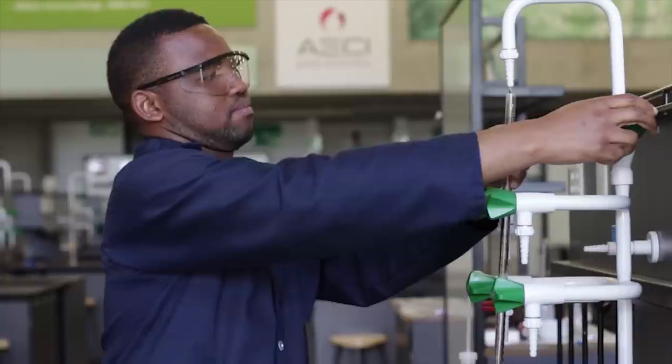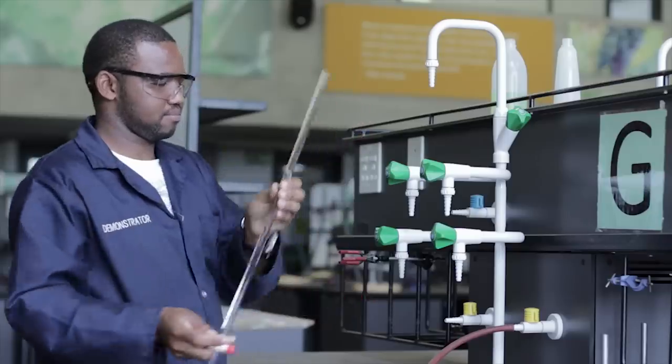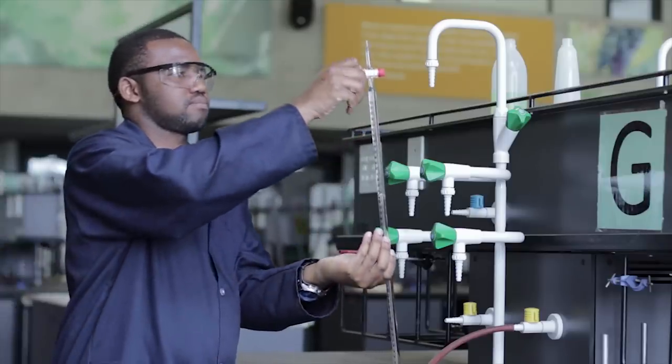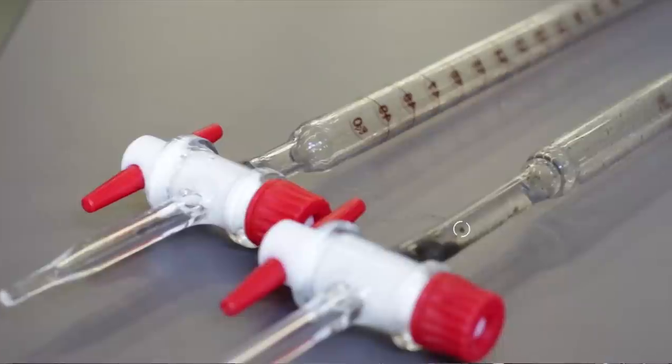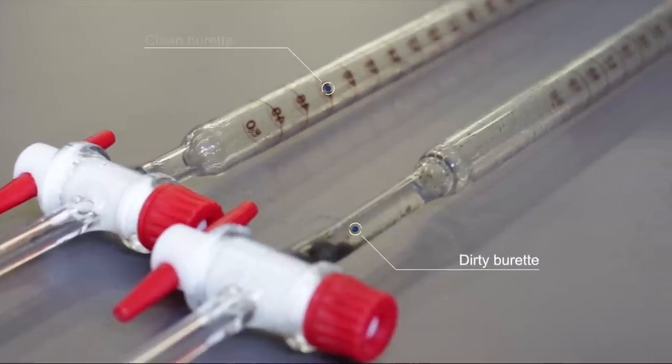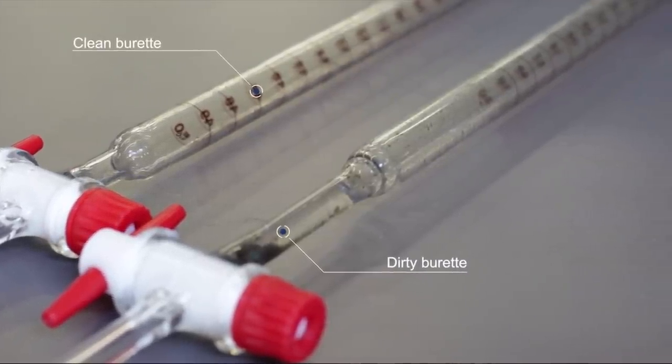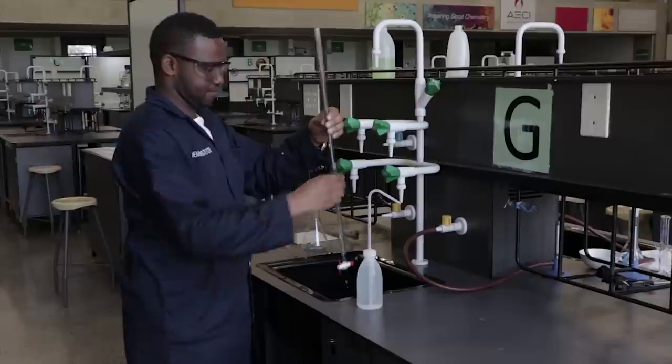The burette is then rinsed thoroughly five to six times with tap water, making sure the burette tap is open. The burette is considered clean when no water droplets stick to the inner surface of the burette.